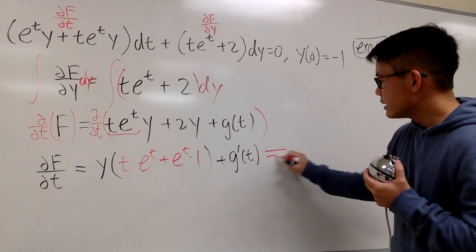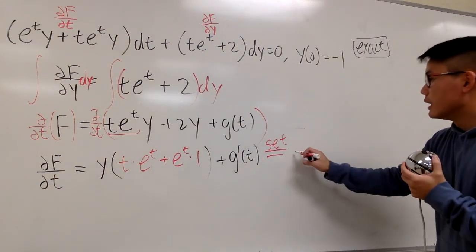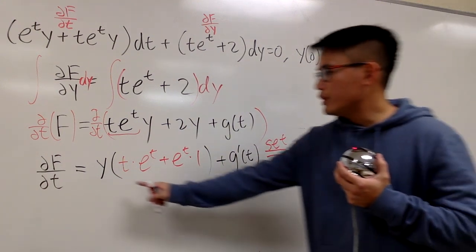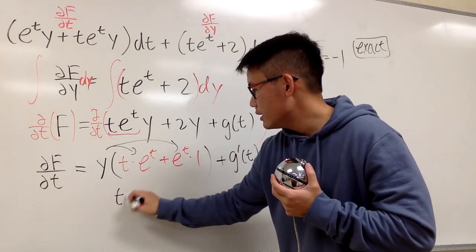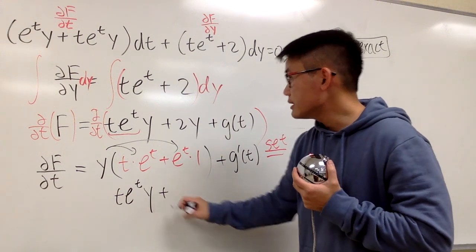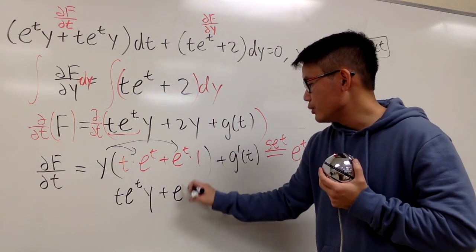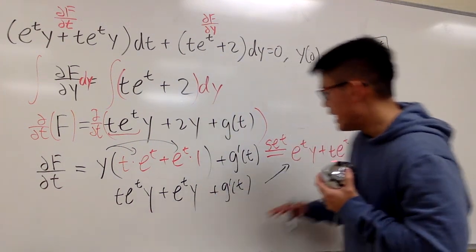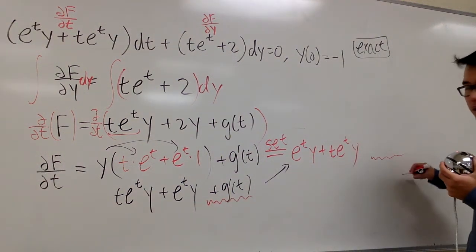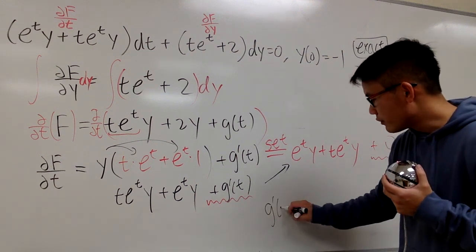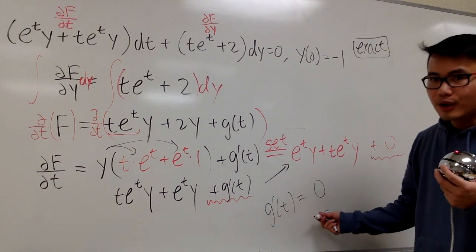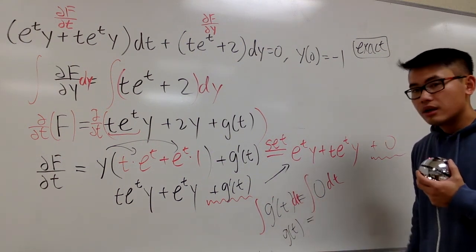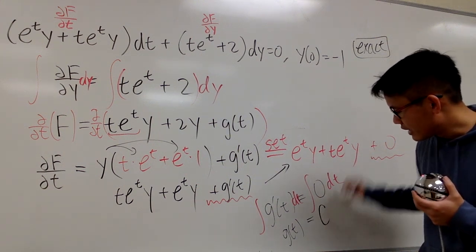Setting this equal to the first expression — e to the T times Y plus T e to the T times Y — and distributing, we get T e to the T times Y plus e to the T times Y plus g prime of T. This matches the right-hand side exactly, so g prime of T must equal 0. Integrating both sides with respect to T, the integral of 0 is just a constant c.